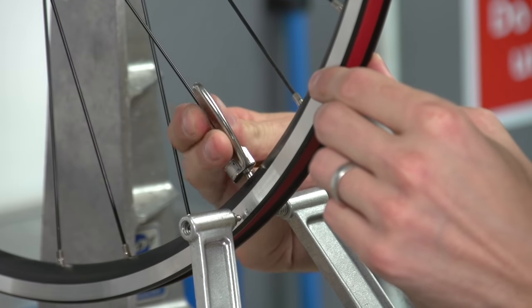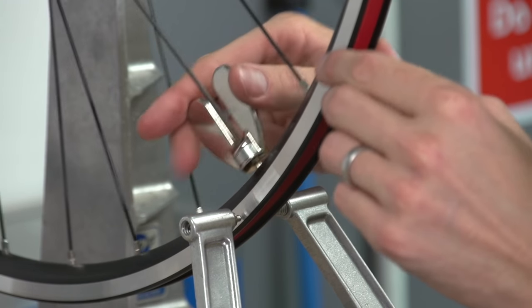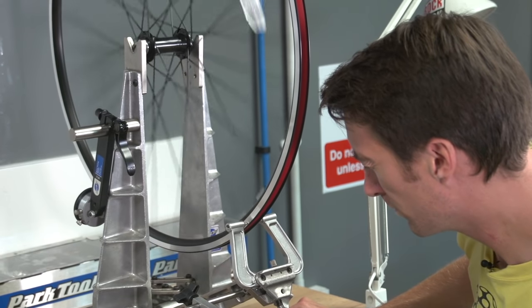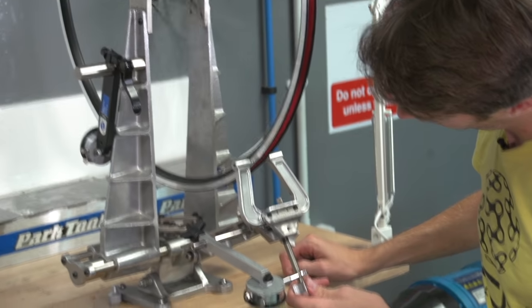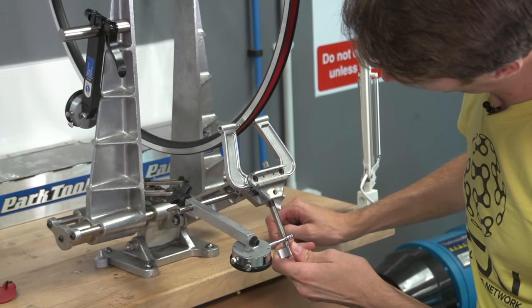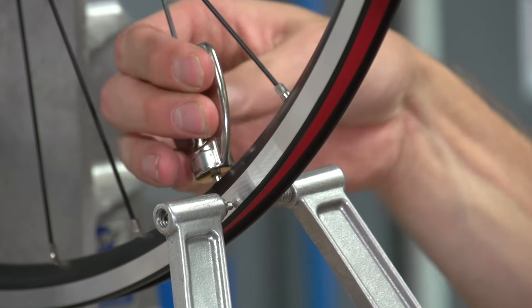Keep going around the rim until it no longer touches the dishing fingers, at which point you can wind these fingers in and start going around the rim again. You can spend as much or as little time as you want going around the wheel, but of course the longer you spend on it, the truer it will be, and the longer it will remain in true.